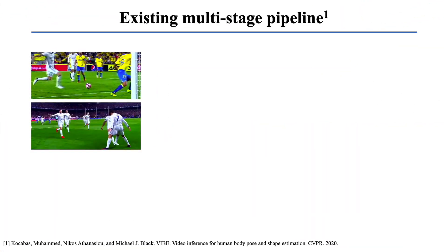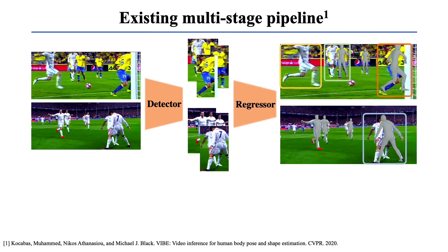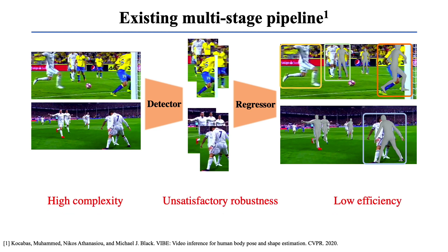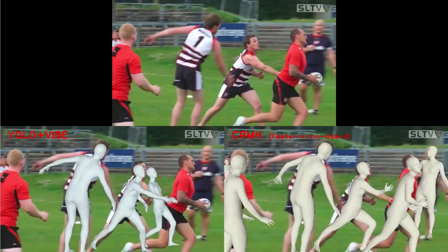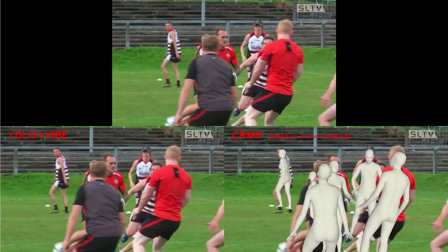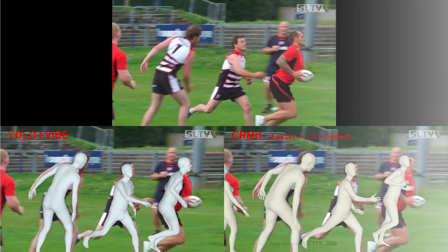Existing methods follow a multi-stage pipeline. They first detect each person, and then regress the 3D pose and shape for each of them independently. This two-stage approach can't exploit the full image information, producing unsatisfactory results. Especially when people are truncated by the image frame or occluded by other people, these multi-stage methods often fail.